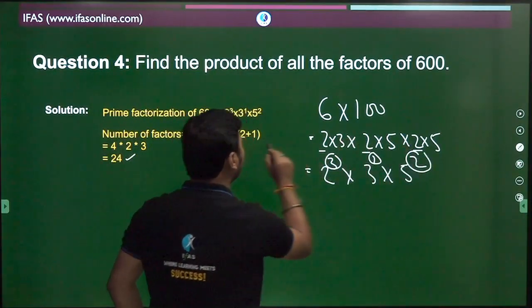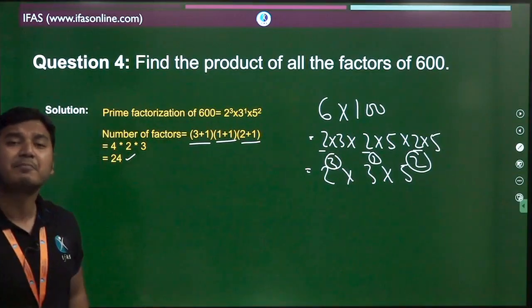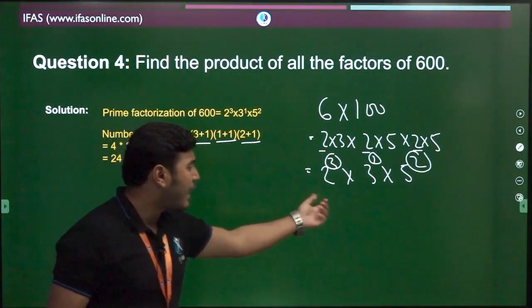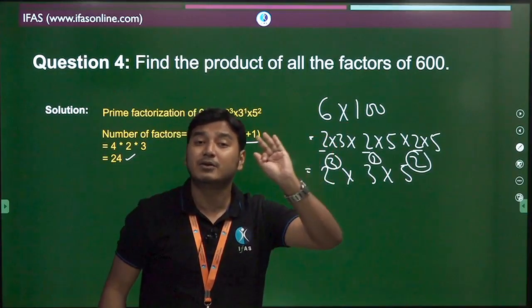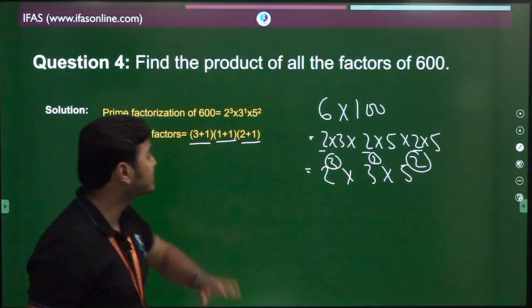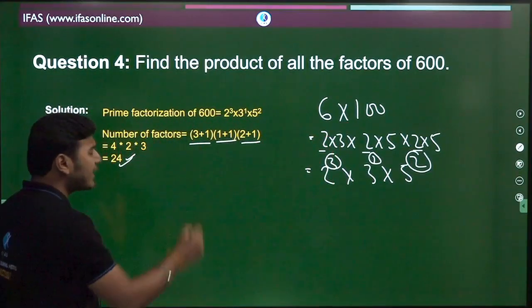To find the number of factors, you don't need to think about which prime numbers they are. So students, the number of factors comes out to be 24.